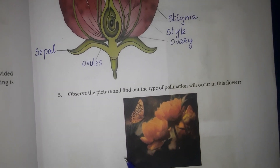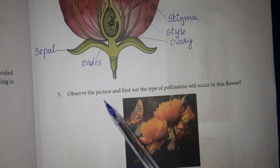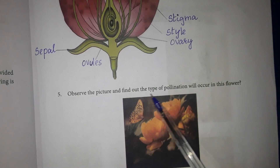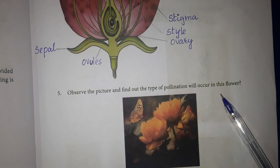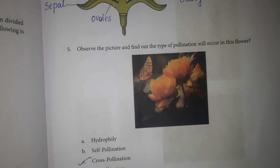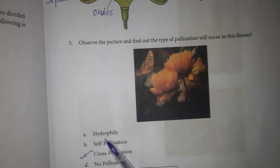Question 5: Observe the picture and find out the type of pollination that will occur in this flower. Answer option C — Cross pollination.